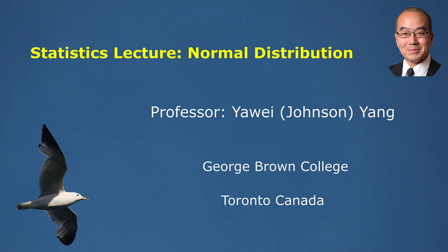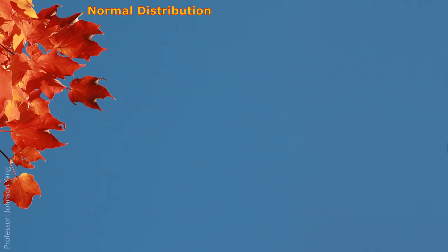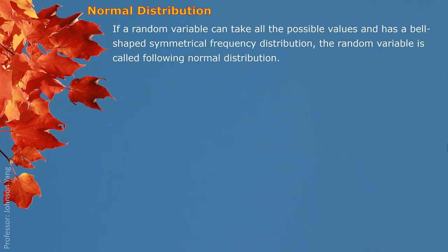Hello everyone. Here we talk about normal distribution. If a random variable can take all the possible values and has a bell-shaped symmetrical frequency distribution, the random variable is called following normal distribution.